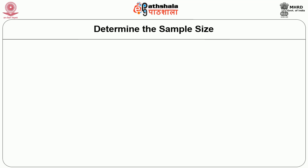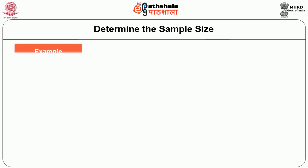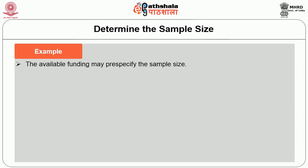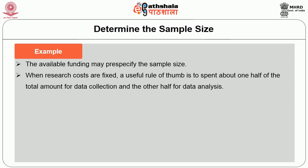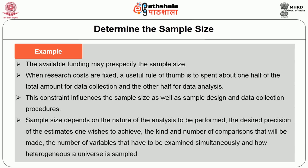Step 5: determine the sample size — how many elements of the target population are to be chosen. The question of how large a sample should be is a difficult one. Sample size can be determined by various constraints; for example, available funding may specify the sample size. A useful rule of thumb when research costs are fixed is to spend about one half of the total amount on data collection and the other half on data analysis. In general, sample size depends on the nature of the analysis to be performed, the desired precision of the estimate, the kind and number of comparisons to be made, the number of variables to be examined simultaneously, and how heterogeneous the universe being sampled is.